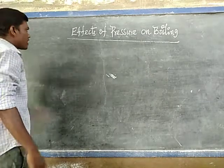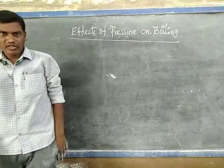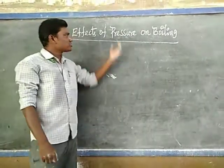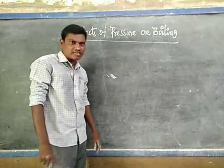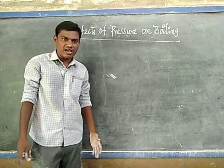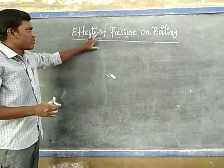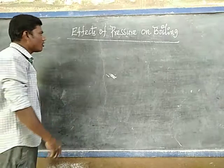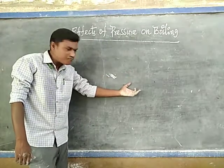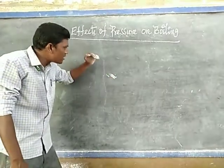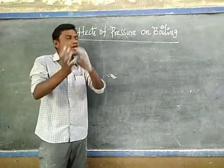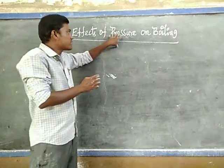The next concept is the effects of pressure on boiling. Previously, we discussed this and one question they regularly ask is: why do we use a pressure cooker, especially for cooking? That question depends on the concept of effects of pressure on boiling. What is the relation between pressure and boiling point? From the previous experiment in the same video on how to find the boiling point of water experimentally, we can understand: if the pressure increases, the boiling point also increases.